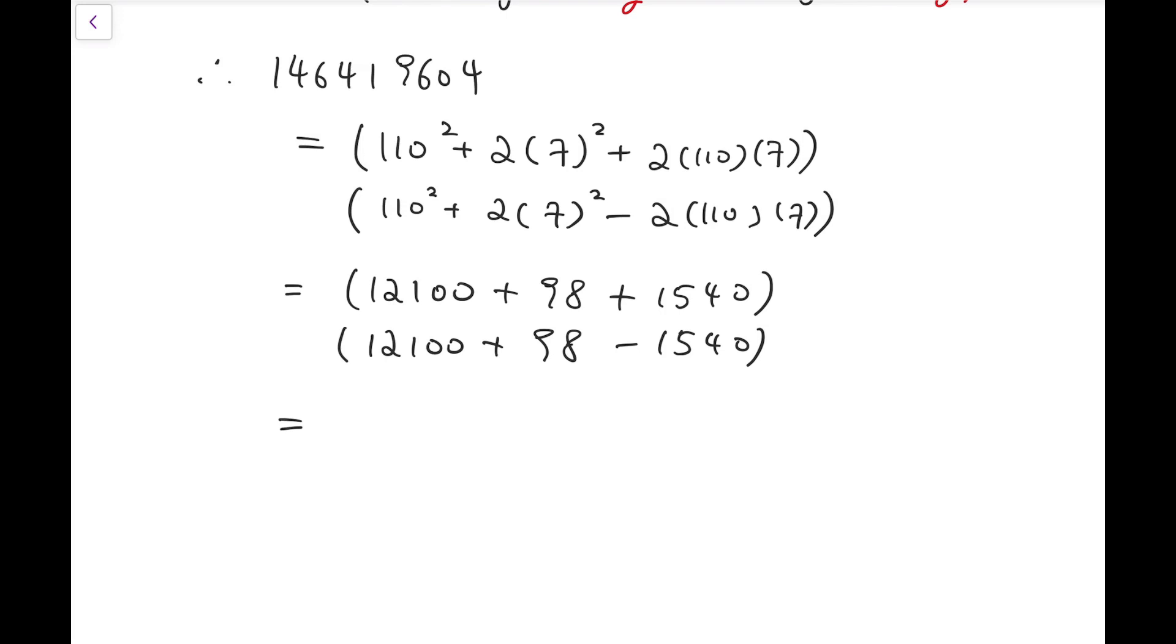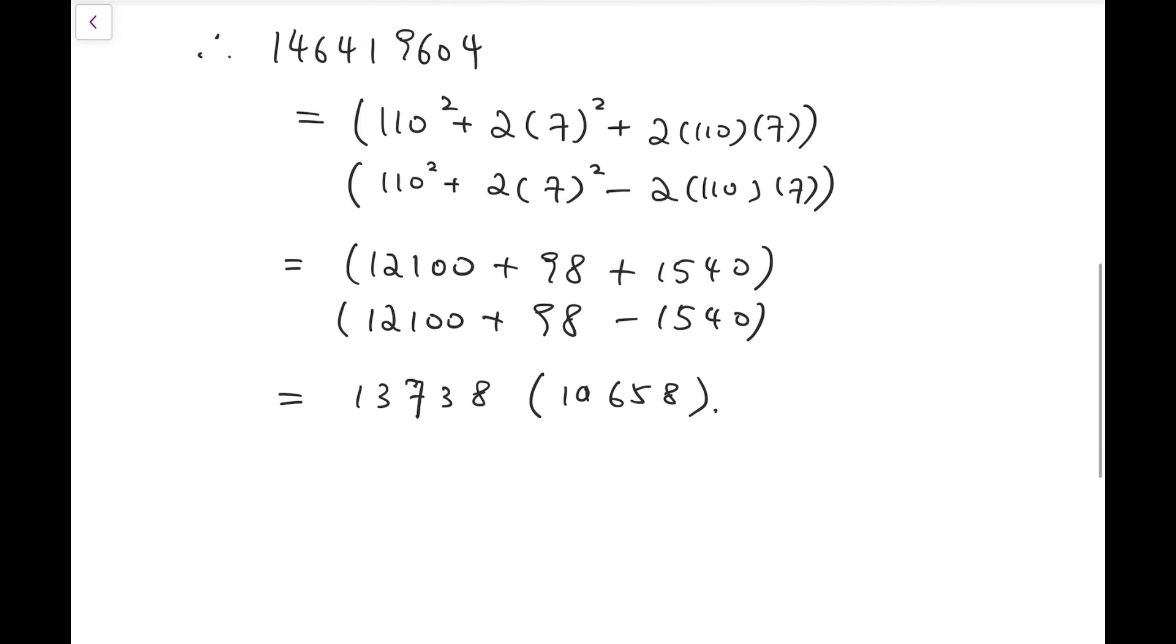So we compute that by hand, and the first one will be 13738 multiplied by 11658. Sorry, it's 10 instead, 10658. So we've managed to rewrite that big number in the product of two five-digit numbers.